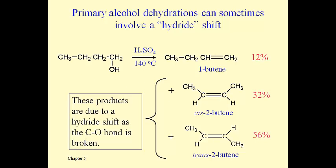This next slide is another example of that. If you dehydrate 1-butanol you might expect to get 1-butene, and you do get some, but mostly what you get are these others. Because initially a positive charge that would form at the first carbon is not going to be stable. But if that positive charge moves over to the secondary position, that's a little bit better.